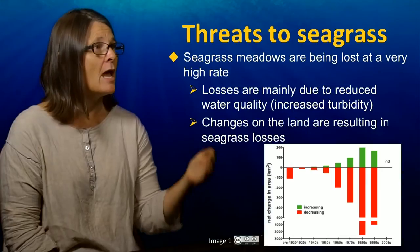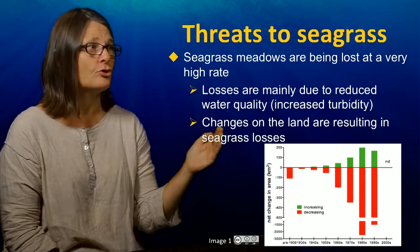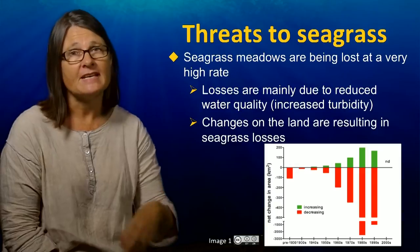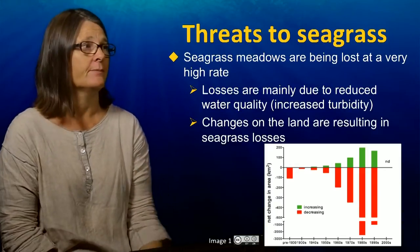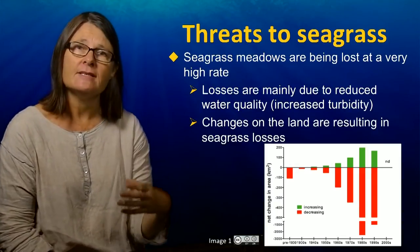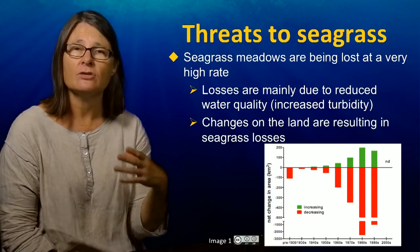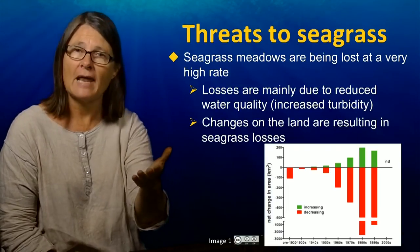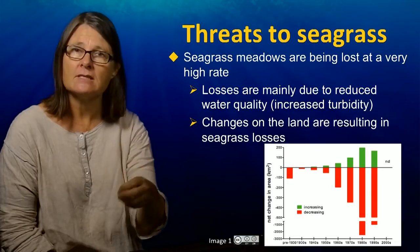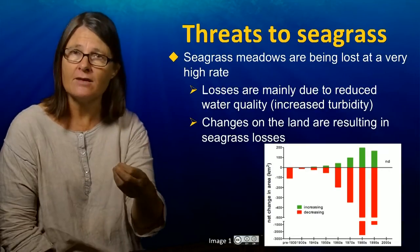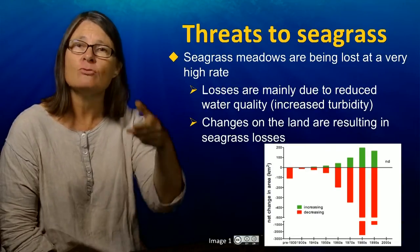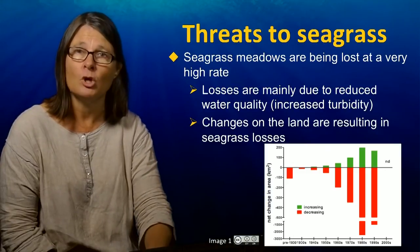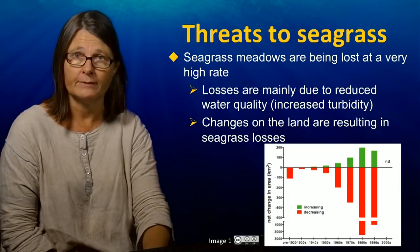The decreases are mainly due to reduced water quality, meaning increases in turbidity. These increases in turbidity are largely the result of inputs from the land — sediments, nutrients, and other pollutants that reduce the light that can reach the sea bottom where the seagrasses are growing.